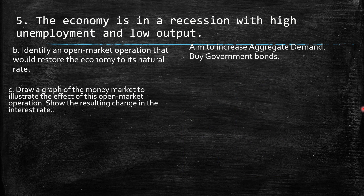b. Identify an open market operation that would restore the economy to its natural rate. The aim is to increase aggregate demand. The Fed can inject money into the economy by buying government bonds and providing liquidity to the owners of those bonds.